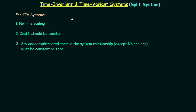We already know the process to find out if a system is time invariant or time variant by checking the three necessary and sufficient conditions. A system is said to be time invariant if it satisfies all three conditions. In this presentation we are going to discuss what split systems are, and once we have an understanding of split systems, we will find out if they are time invariant or time variant.